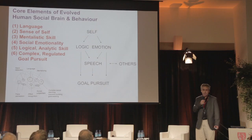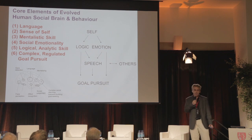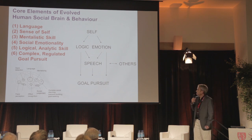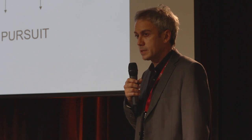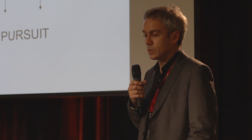We can abstract the social brain into a small number of core components — traits that are either unique to humans or very highly developed in humans. These include language, sense of self, mentalistic skill, theory of mind, metacognition, social emotionality — so there are basic emotions like fear and anger, and then complex social emotions such as pride, guilt, embarrassment, shame, and contempt — as well as logical analytic skill commonly deployed in social contexts, and complex long-term regulated goal pursuit.